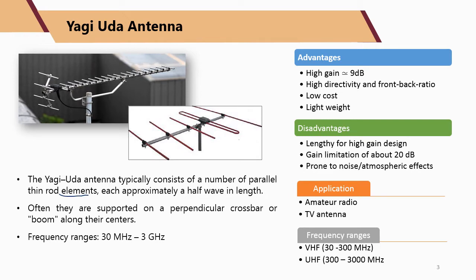The rod elements are about half a wavelength in length, and they are supported on a perpendicular crossbar also known as a boom. The Yagi-Uda antenna is usually designed to operate within a frequency range of 30 MHz to 3 GHz.